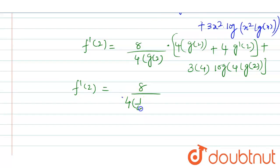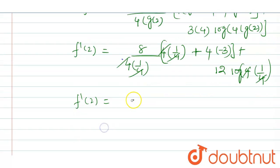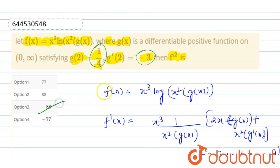Here g(2) = 1/4, so the 4s get cancelled. We have 4 · g'(2) = -3, plus 3 · 4 · 2 · log(4) with g'(2) = 1/4, and 4s get cancelled. So f'(2) = 8 · (1 - 3/2) + log(1) = 0. Therefore f'(2) = -11 × 8 = -88. This is the final answer. Option 3 is the right option — after solving, f'(2) = -88.